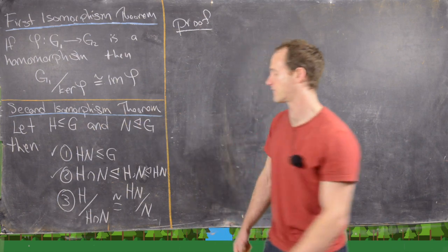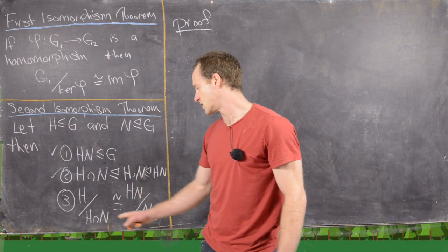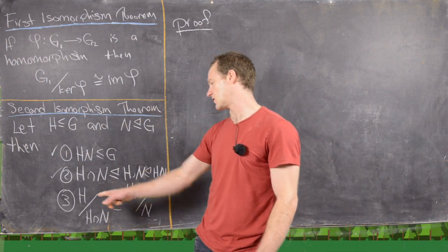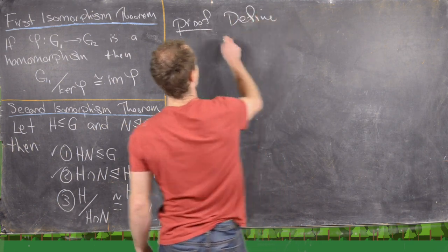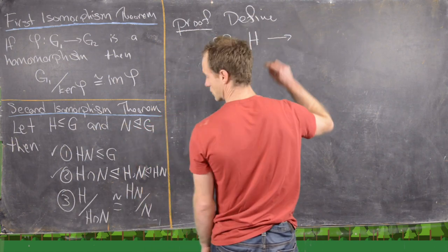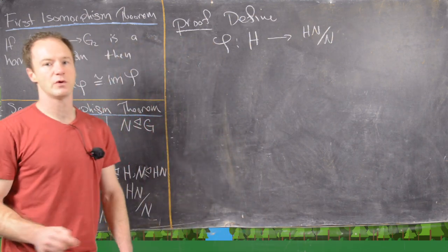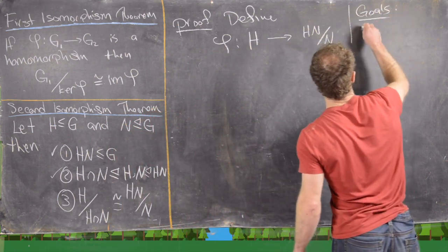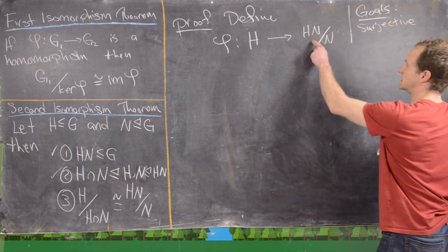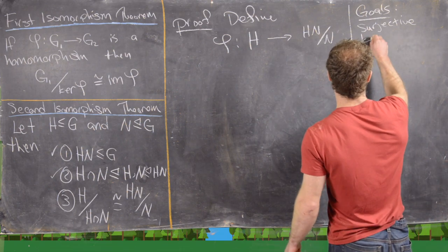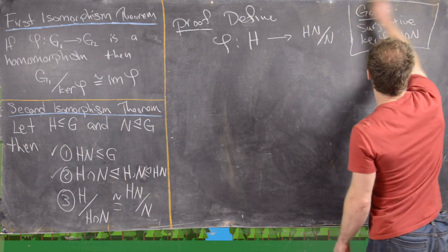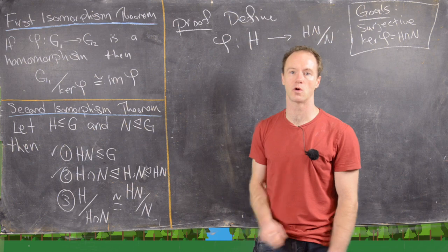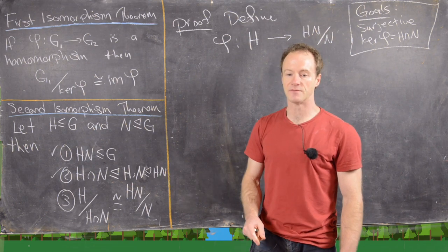To prove the third statement — the isomorphism — we invoke the first isomorphism theorem. We'll define a homomorphism φ from H to HN mod N, and we want it to be surjective with kernel equal to H∩N. If we achieve those two goals, the first isomorphism theorem gives us H mod (H∩N) ≅ HN mod N, and also tells us H∩N must be normal in H — that's how we get the remaining part of statement two for free.